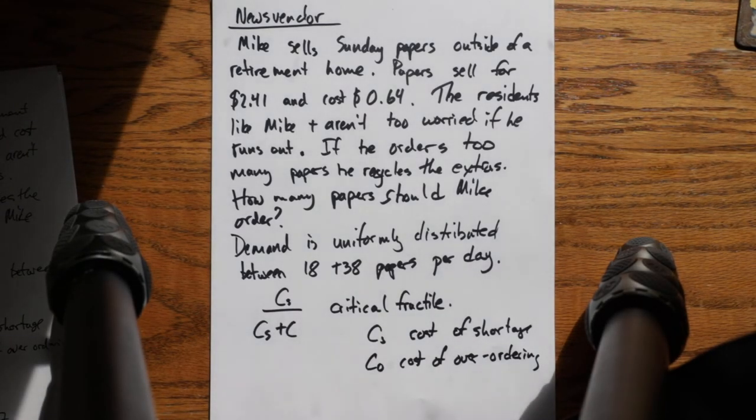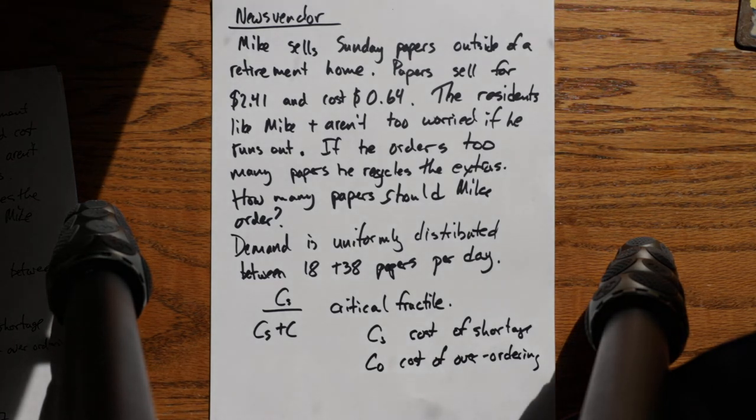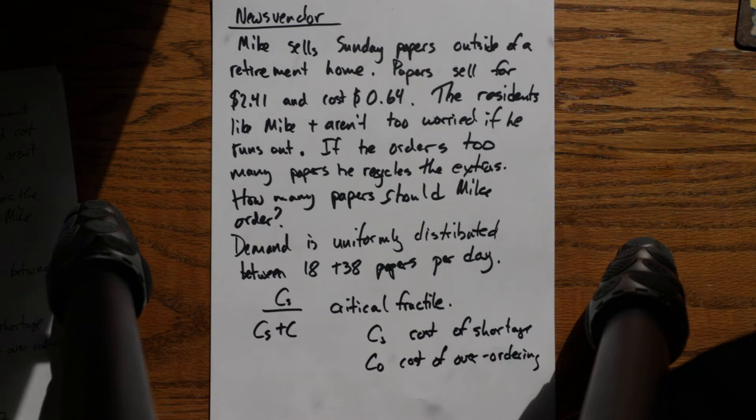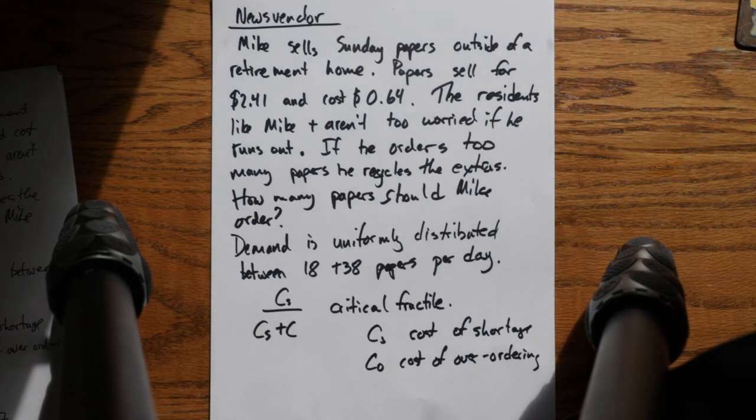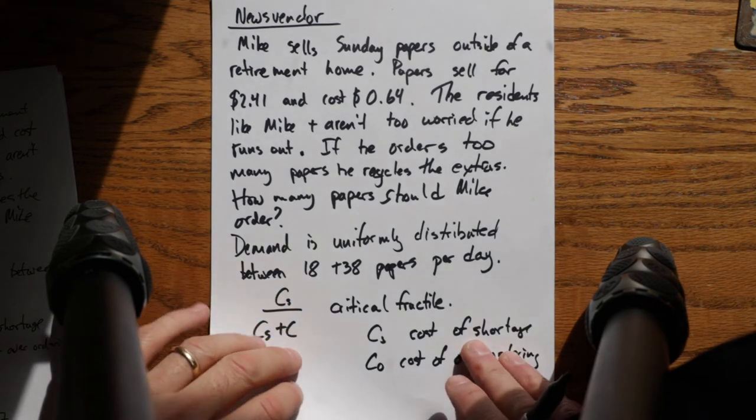If you have a cost of over ordering, in this case it's just the cost of the newspapers. If you had some salvage value, so if someone else would pay you some money for those papers but it's less, then you would include the salvage value so your cost of shortage would go down. And if you have to actually pay to dispose of things, then your cost of shortage might go up. That's what those factors are.